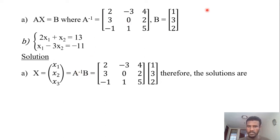A inverse times B, we just calculate by matrix multiplication. By using matrix multiplication we have to find the value of X.